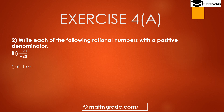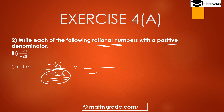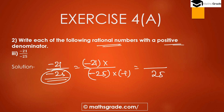Part 3: minus 21 divided by minus 25. Here both numerator and denominator are negative. We multiply the denominator minus 25 with minus 1 to get 25, which is a positive integer. We must also multiply the numerator minus 21 with minus 1 to get 21. So, 21 divided by 25 is the positive rational number with positive denominator 25, equivalent to minus 21 divided by minus 25.